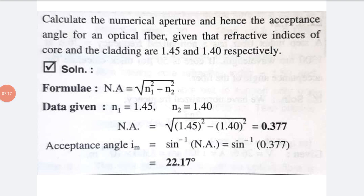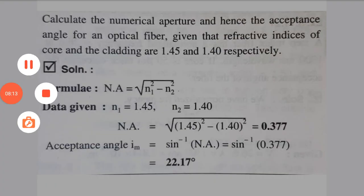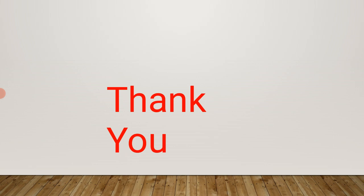Last numerical: Calculate the numerical aperture and hence the acceptance angle for an optical fiber given that refractive indexes of core and cladding are 1.45 and 1.40 respectively. Numerical aperture equals square root of 1.45 squared minus 1.40 squared equals 0.377. Acceptance angle I equals sine inverse of 0.377 equals 22.17 degrees. I hope you have understood these numericals based on optical fiber. Thank you.